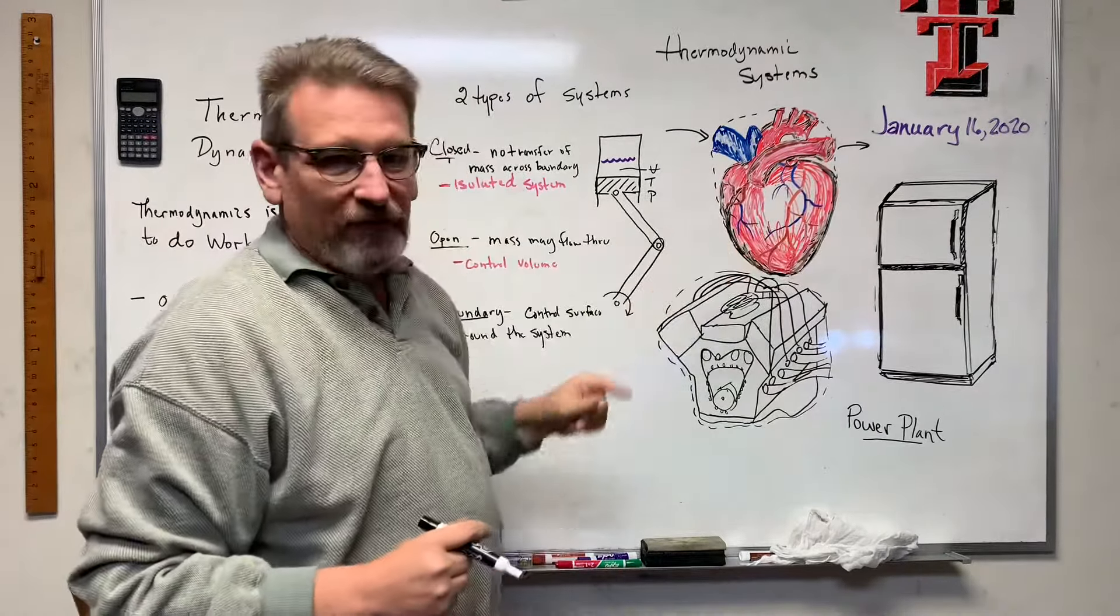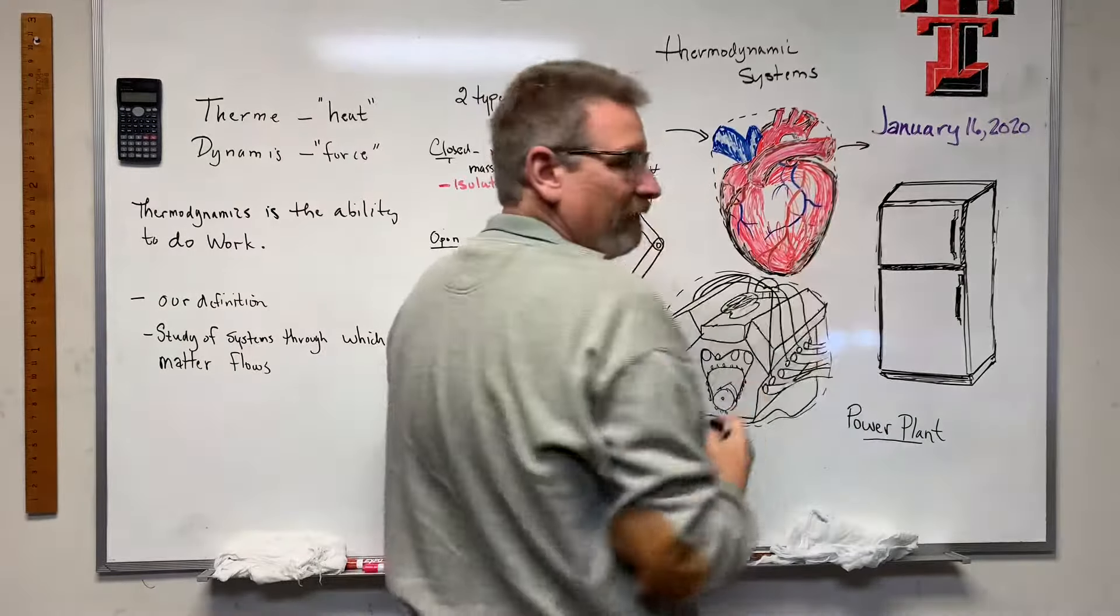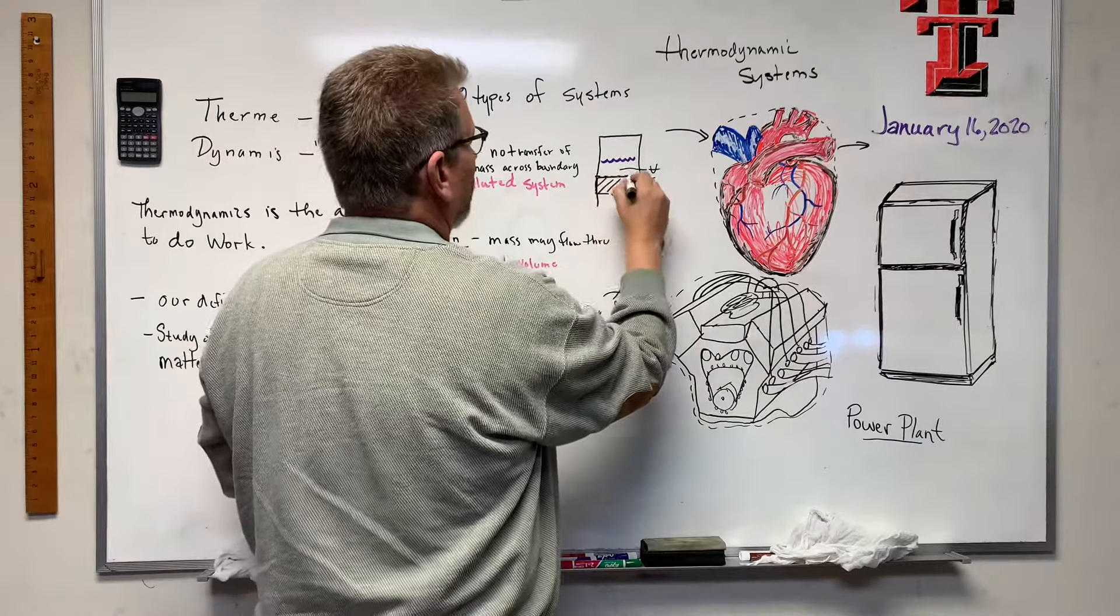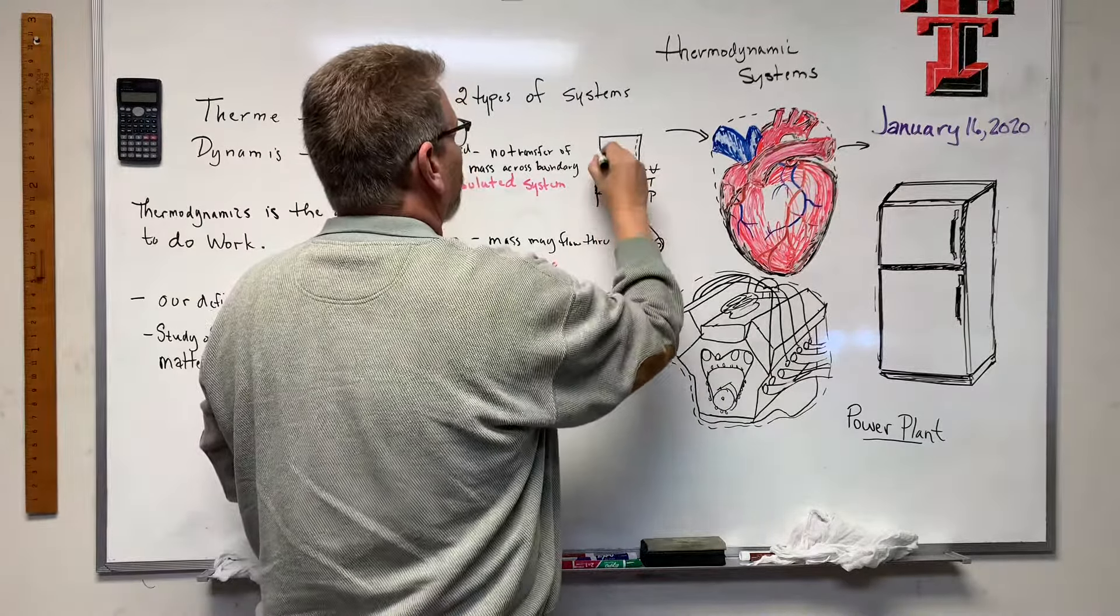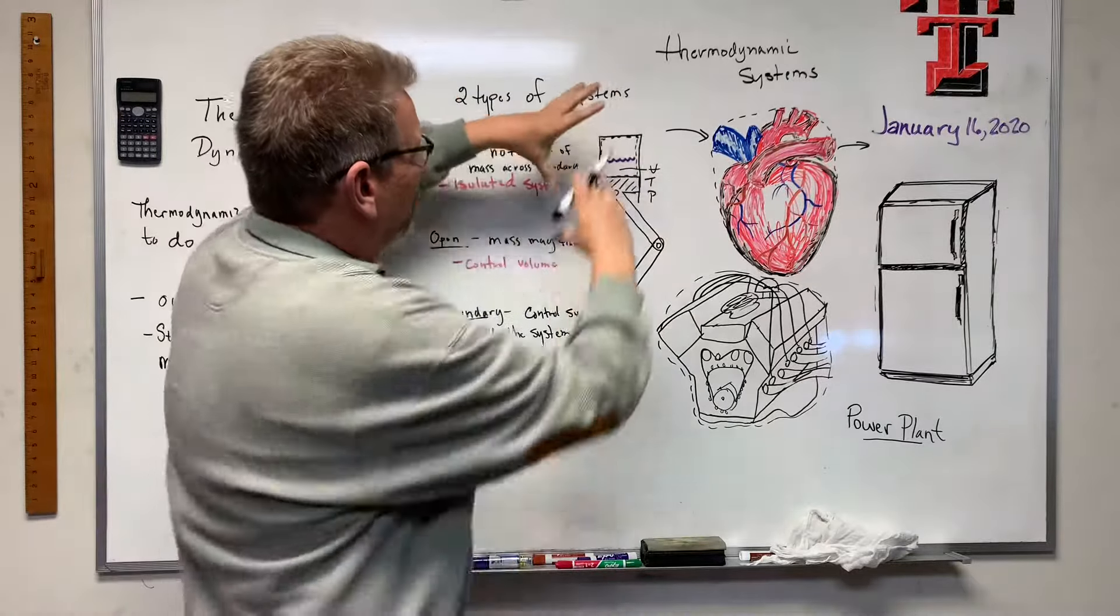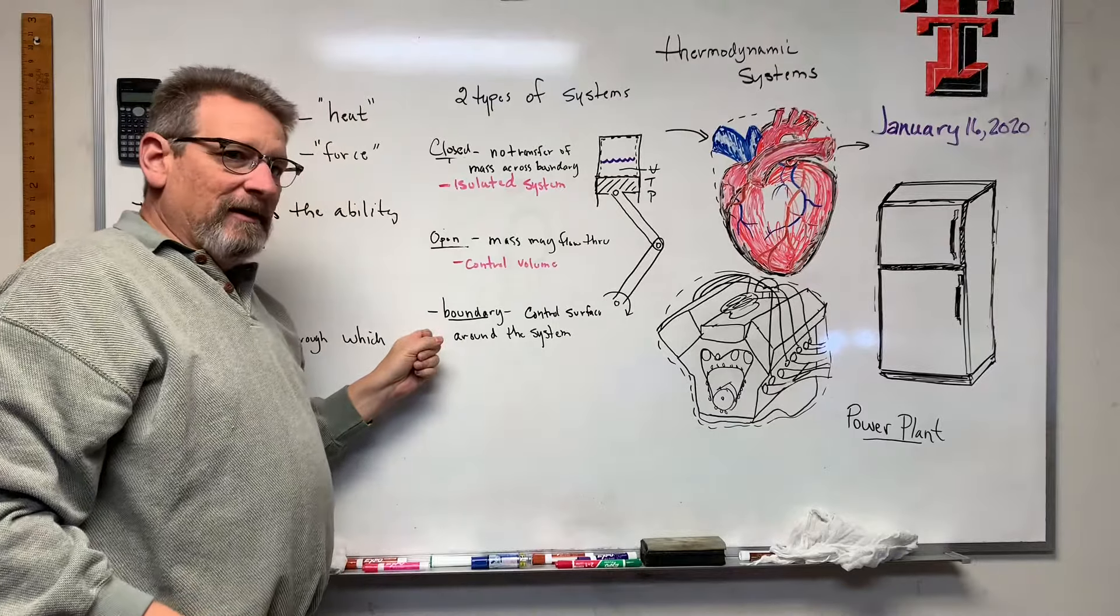And the boundary is another kind of definition that we need to know. The boundary is that surrounding dash line that I drew around that system. It separates the system from the surroundings. That's all you need to know for this one. The boundary would be this space here - it separates the system from the surroundings. That's what the boundary is.